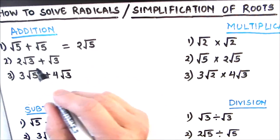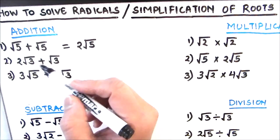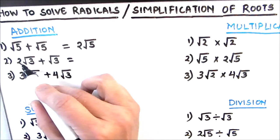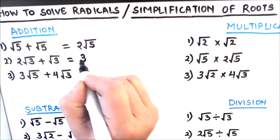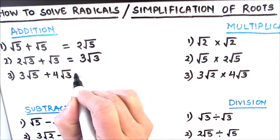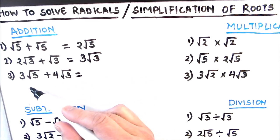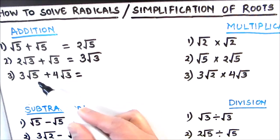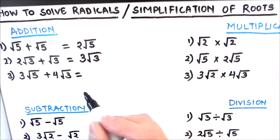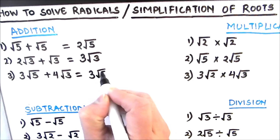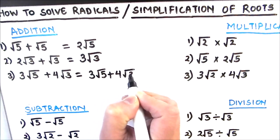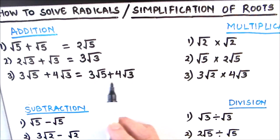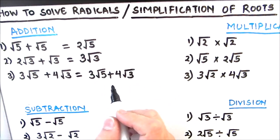If the numbers in the radical signs are the same, you can add them directly. The next one is 2 root 3 plus root 3. This is the same as 2x plus x giving you 3x, so 2 root 3 plus root 3 gives you 3 root 3. The next one is 3 root 5 plus 4 root 3. Here we have different numbers under the radical, so you cannot add them — you have to write it as is: 3 root 5 plus 4 root 3. This is all about the addition of roots.